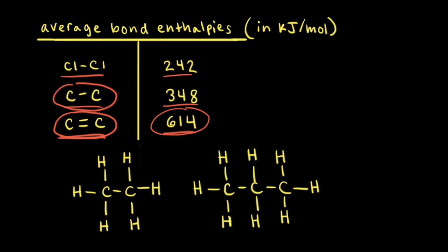The higher the value for bond enthalpy, the stronger the bond. Notice that these are average bond enthalpies — the average bond enthalpy for a carbon-carbon single bond is around 348 kilojoules per mole. You might see slightly different values depending on which textbook you're using, but they're all pretty close to the same value.